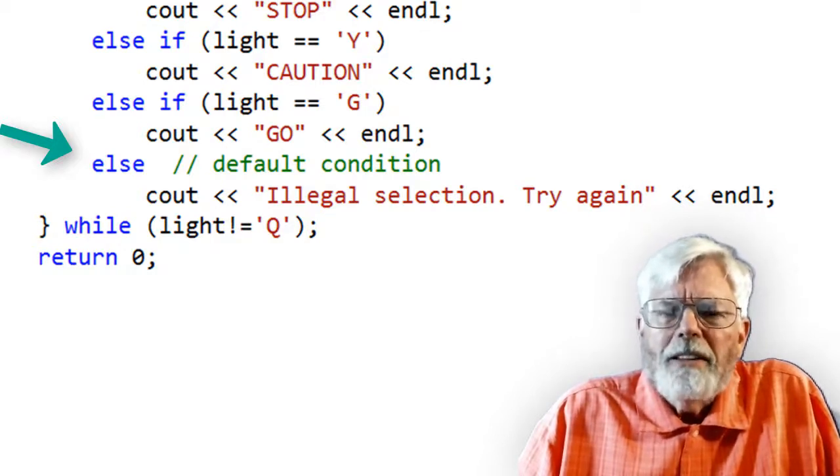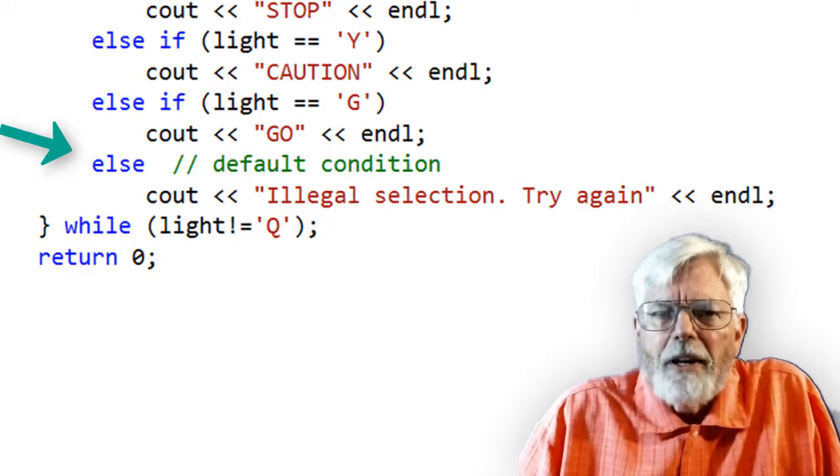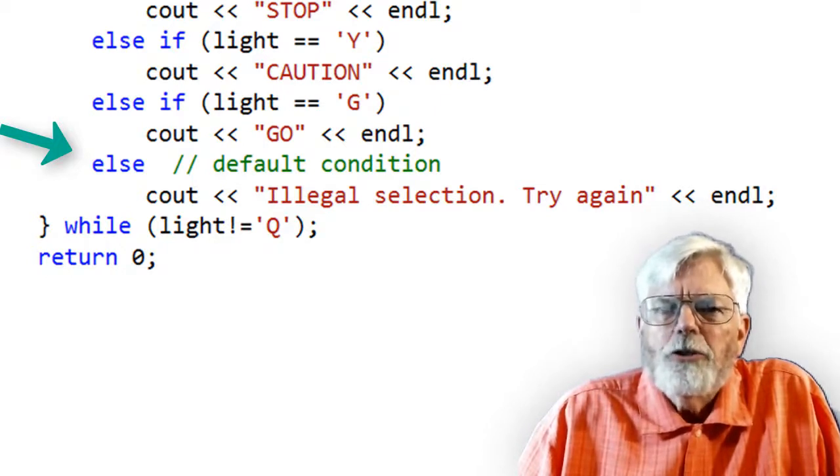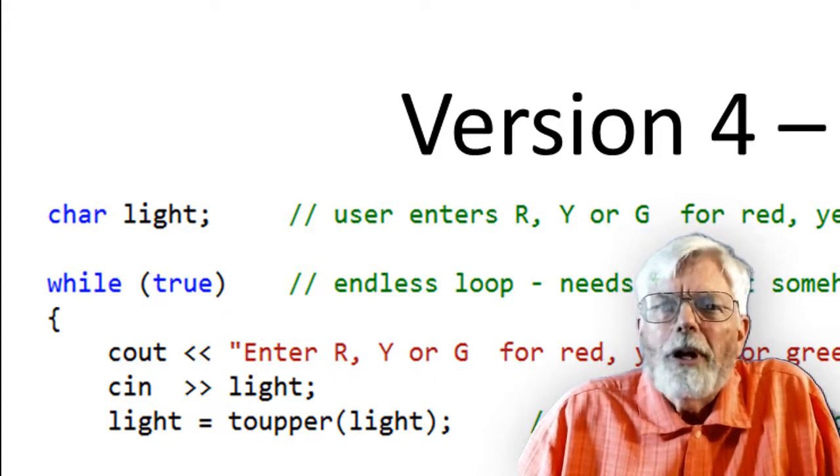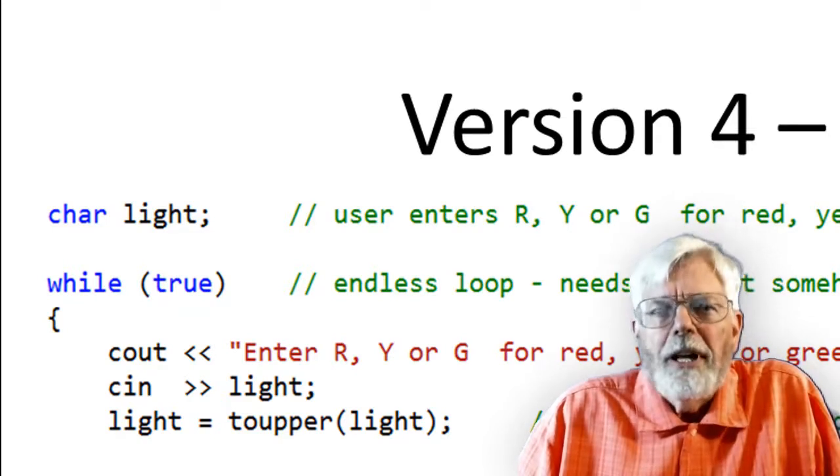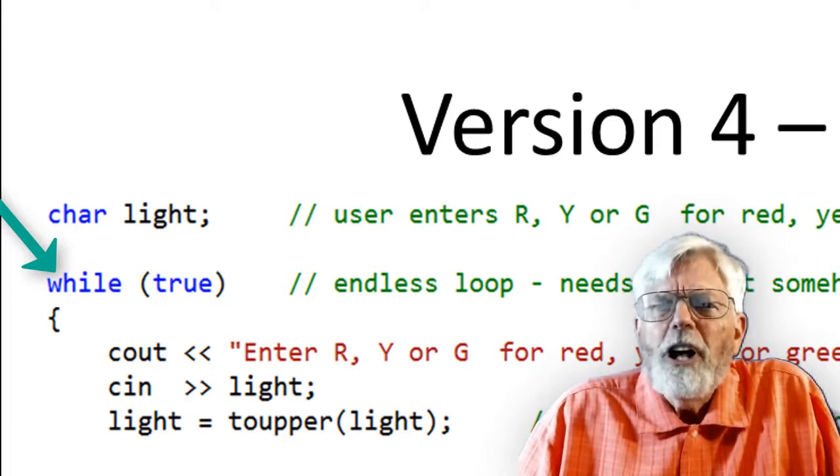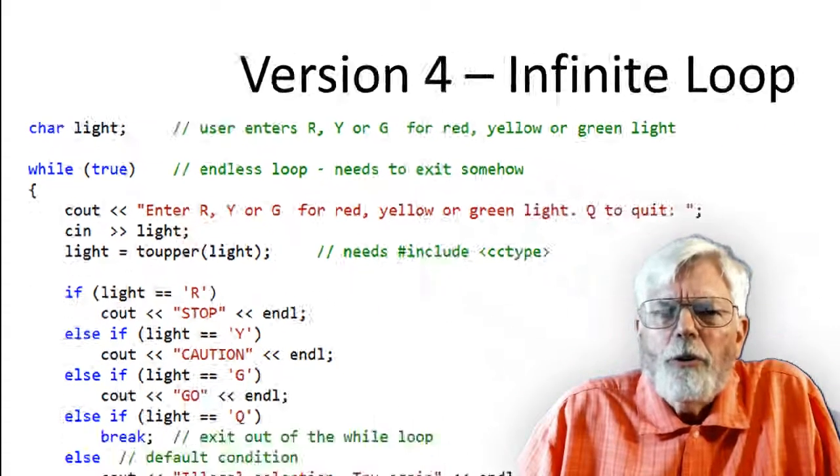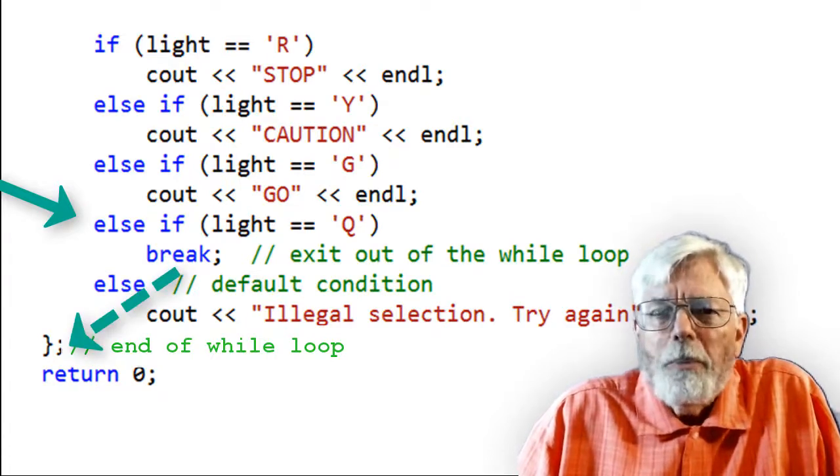We don't need to worry about modifying the final IF in a previous example in the event that something new was added, such as processing an F character for flashing red. The only problem with this code is that entering a Q to quit the program also causes the illegal selection message to appear. An extra IF statement should be added to process the Q. I did something else here that is very common in embedded systems where code becomes part of the product, such as a microwave oven. I created an infinite loop using while true. Other than embedded systems, it's usually not considered a good idea to use infinite loops. This loop will never end unless something causes it to break out of the loop. The BREAK statement is executed when the letter Q is entered at the keyboard. The BREAK causes the program to exit the loop, but not exit the program.